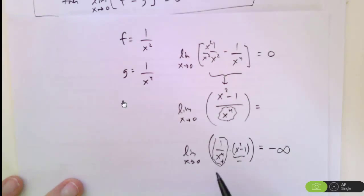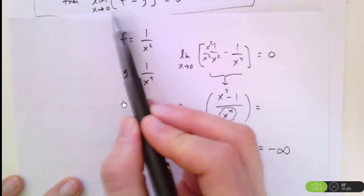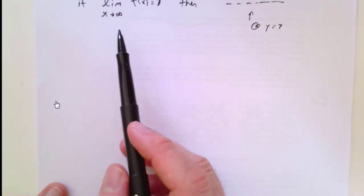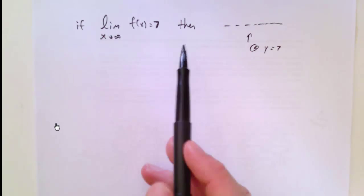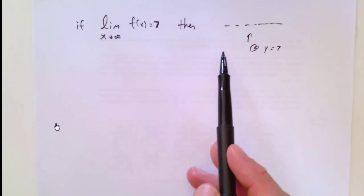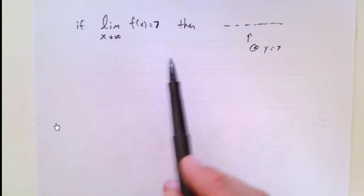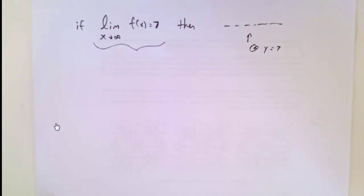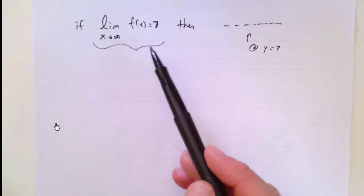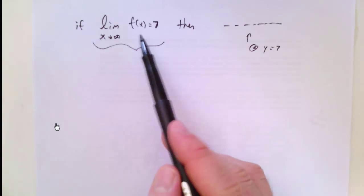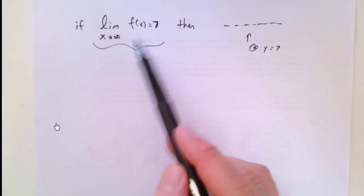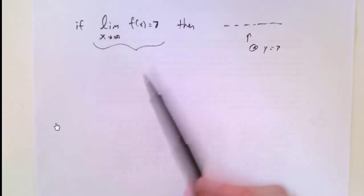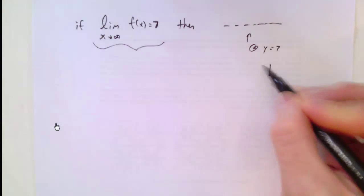So we have two different examples: one where the limit of the difference equals 0, and another where it doesn't. So this statement is sometimes true. The next claim is that if the limit as X approaches infinity of f equals 7, then the function must have a horizontal asymptote at y equals 7. This one is always true because of how we define a horizontal asymptote — as X values approach infinity, the function approaches the Y value 7.